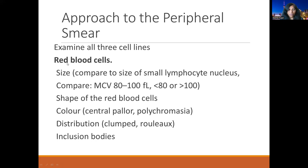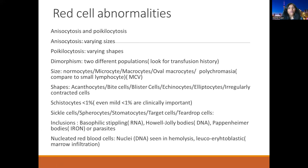For a systematic approach, first look at red blood cells — their size, number, shape, color, distribution, and any inclusion bodies. RBC size is approximately 7.2 microns and has almost a similar size to the small lymphocyte nucleus. We can also compare size to the MCV: normal MCV is 80 to 100 femtoliters; anything less than 80 is microcytic, anything more than 100 is macrocytic. Then look at the shape, the central pallor, distribution (clumping, agglutination, rouleaux formation), and any inclusion bodies within those RBCs.